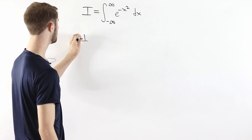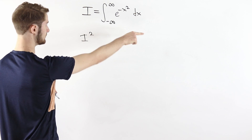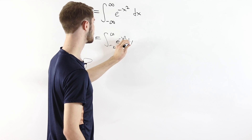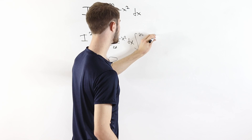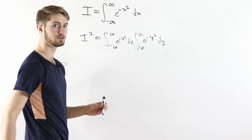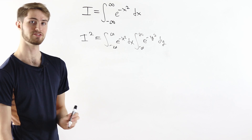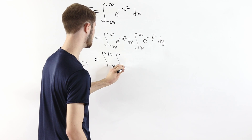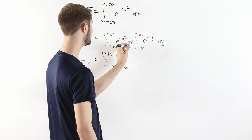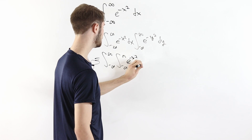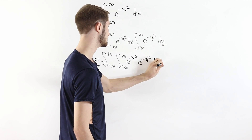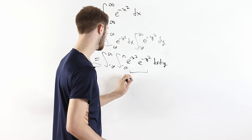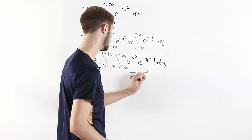One way we can evaluate this is to multiply the integral by itself. So if i equals this integral, then i squared equals the integral of e to the minus x squared dx times the integral of e to the minus y squared dy. These two are the same integral, just written with a different variable y. We can combine them to get the double integral of e to the minus x squared times e to the minus y squared dx dy.